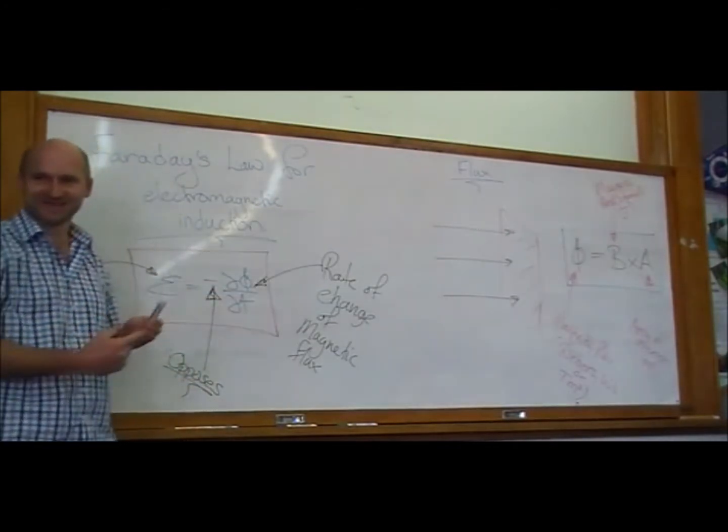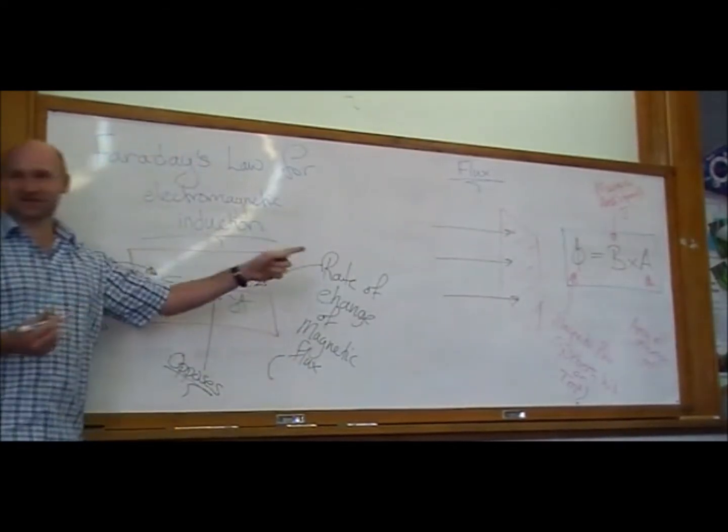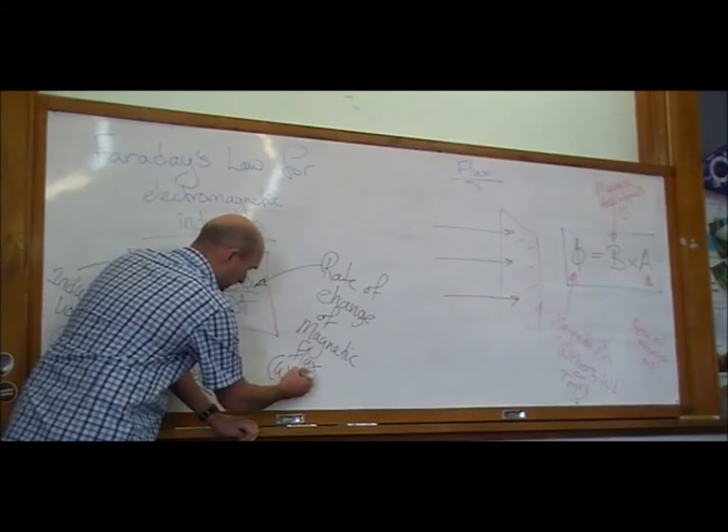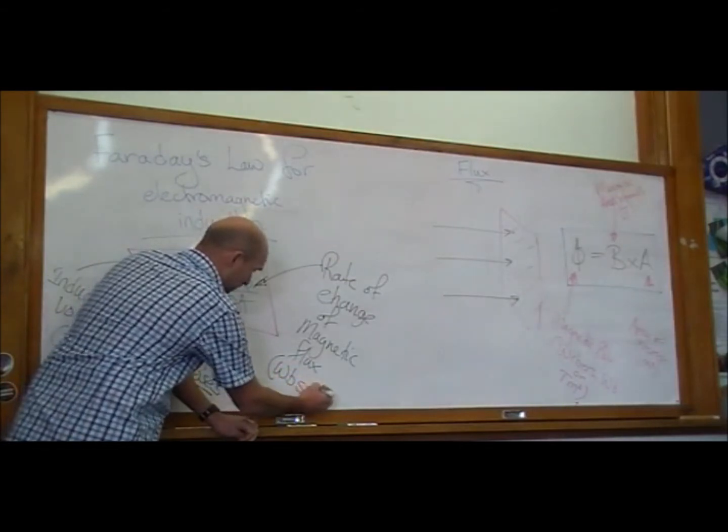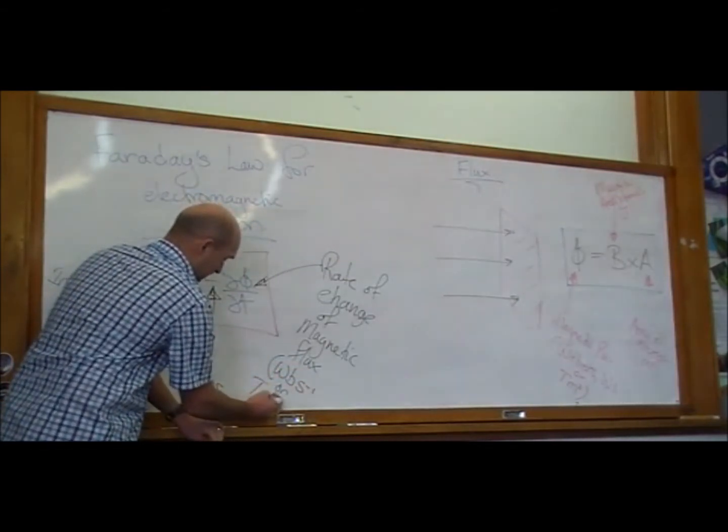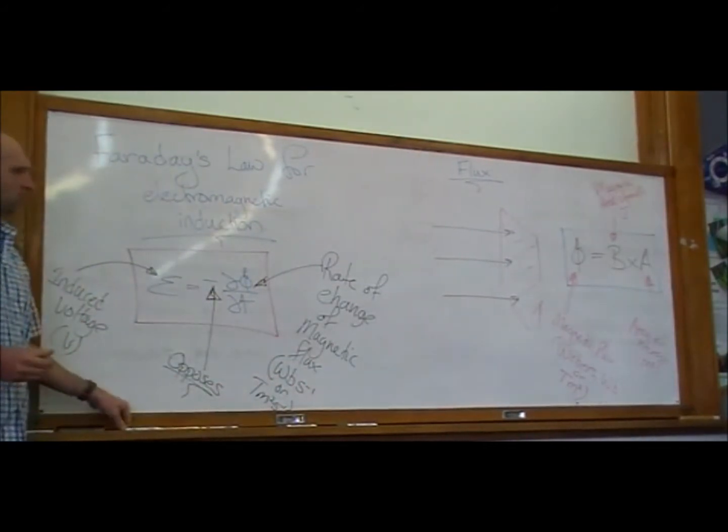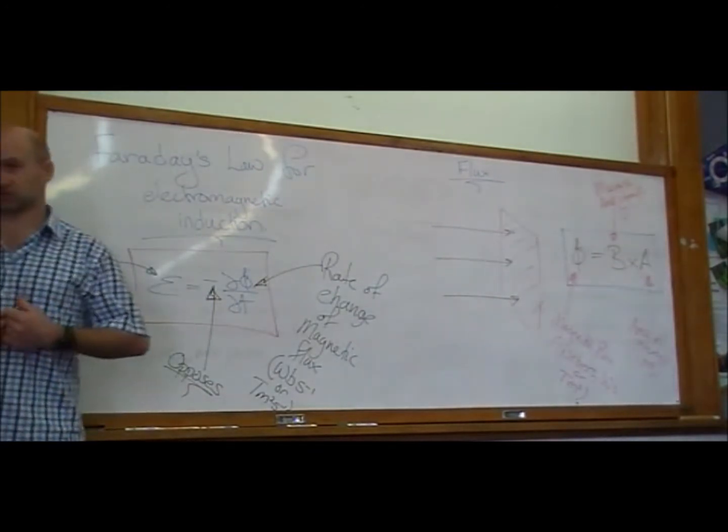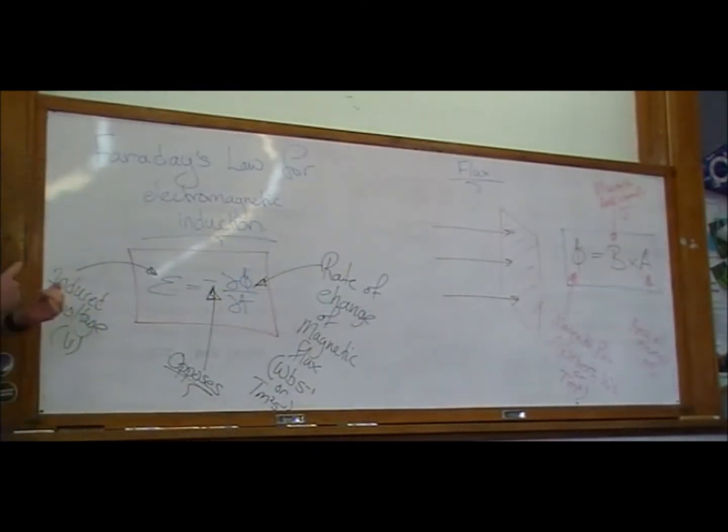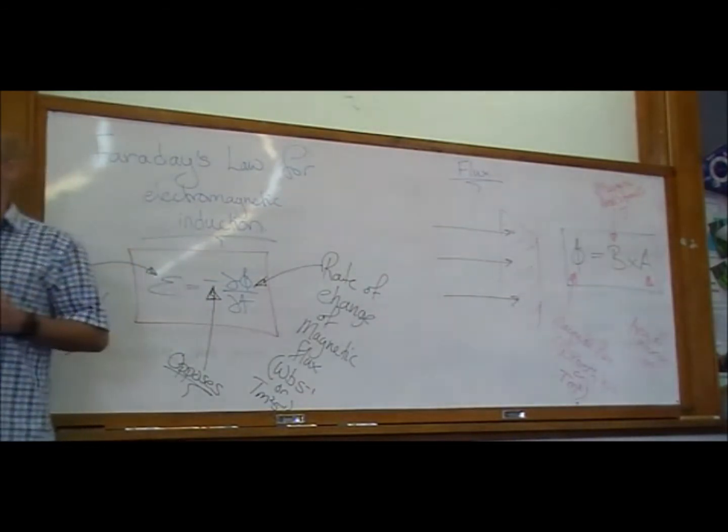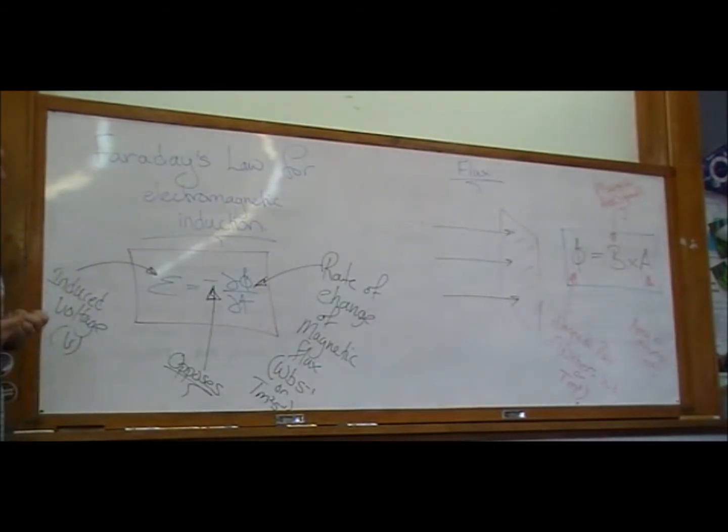You see the circle that we had to fill in this question mark before. The rate of change of magnetic flux can be measured in Webers per second, or Tesla meters squared per second. And so what Faraday noticed when he broke down the law for electromagnetic induction is that an induced voltage just depends on the rate of change of magnetic flux, or magnetic field through an area.